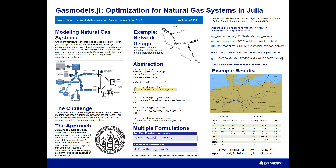Our approach is based on the observation that Julia and the Julia package JuMP are natural software environments to develop a general computational framework for doing extensible implementations of natural gas formulations, to allow us to do comparisons and contrasting of different emerging problems and do mix-and-match modeling of different components of how you formulate a natural gas system. And this really is the essence of GasModels, this Julia package.